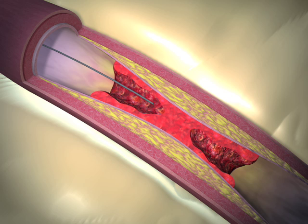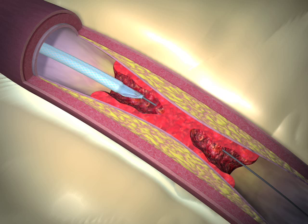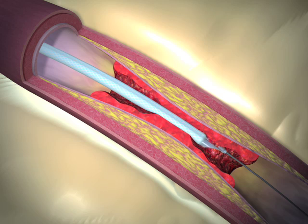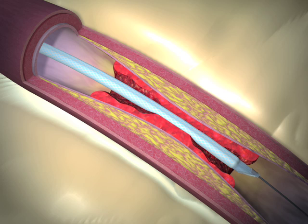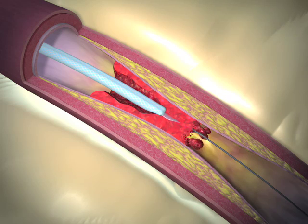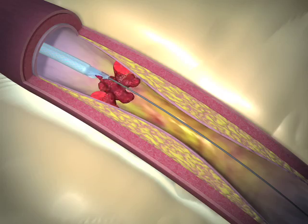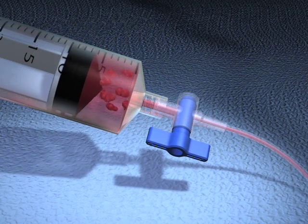In the aspiration technique, a guide wire is passed through the occluded artery associated with the infarct, and a small catheter is advanced into the occluded segment. Direct aspiration of the occluding thrombus is performed by withdrawing the catheter through the clot while extracting the thrombus material into a syringe.